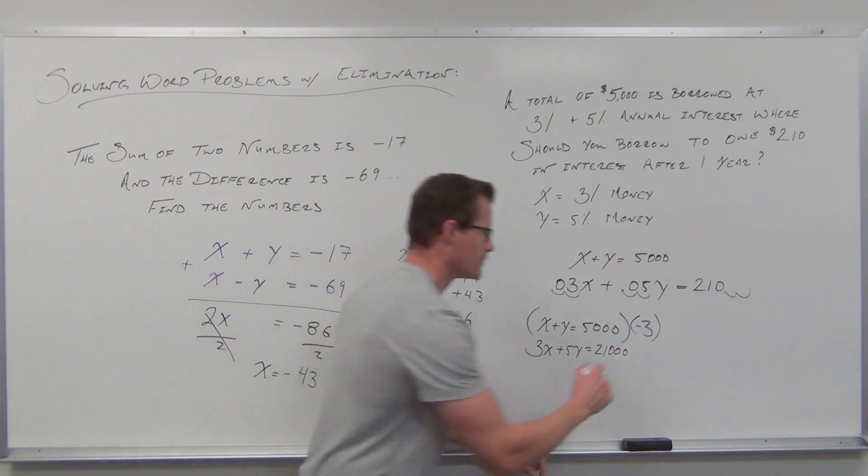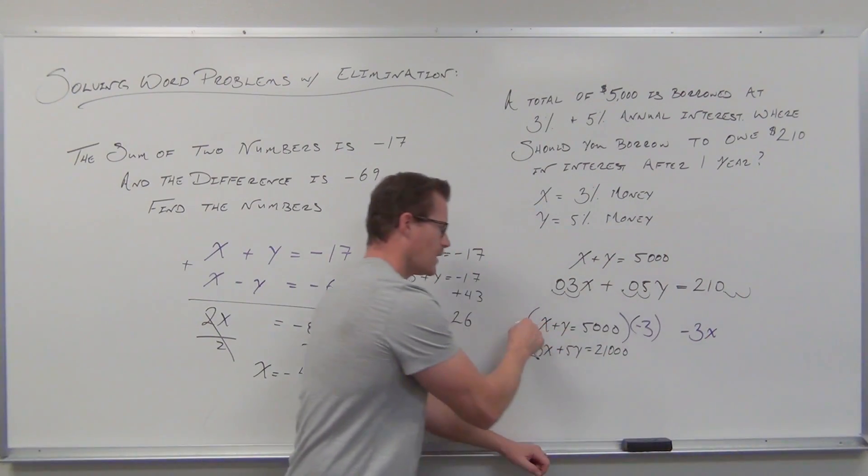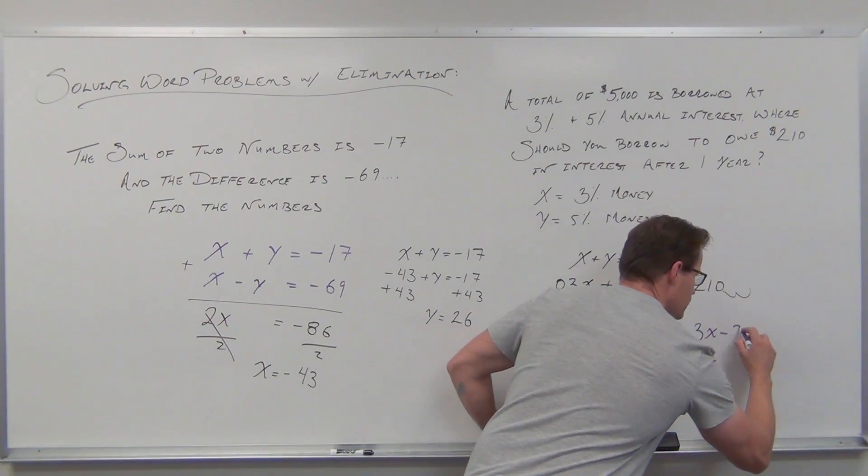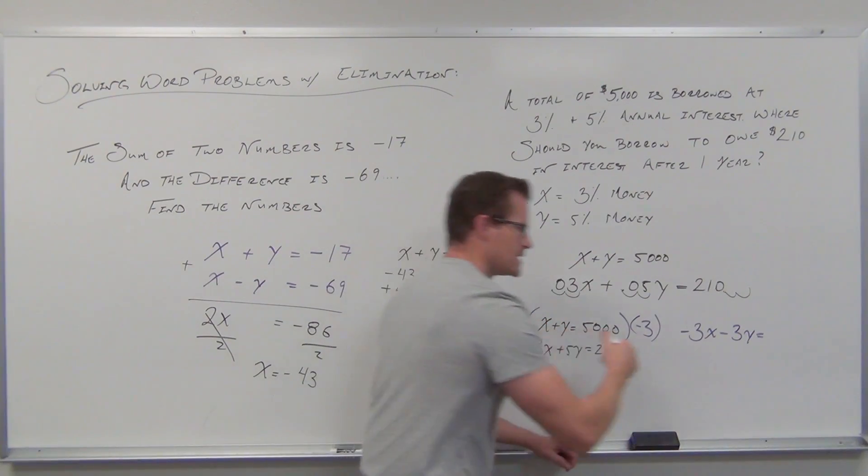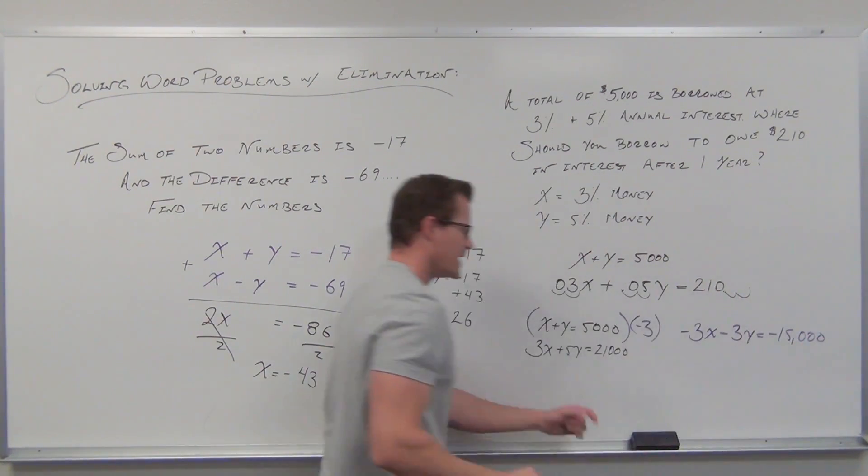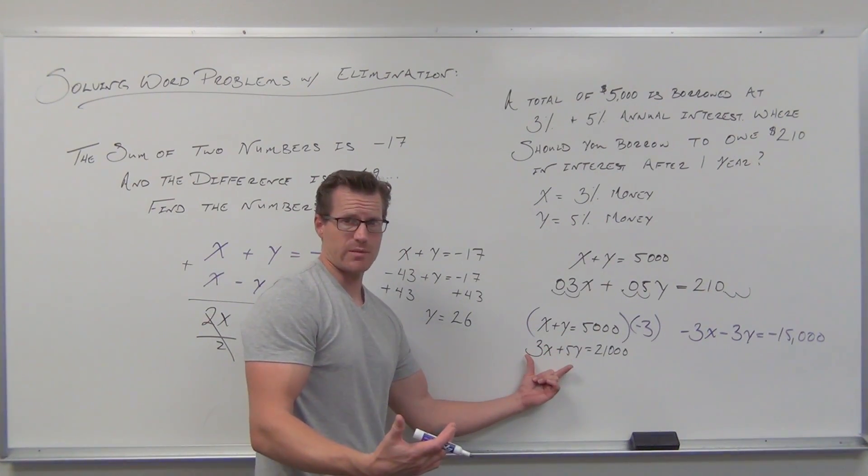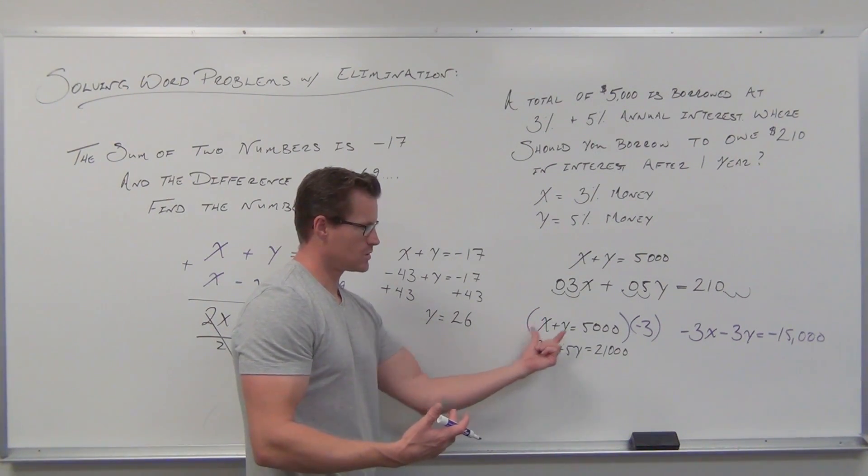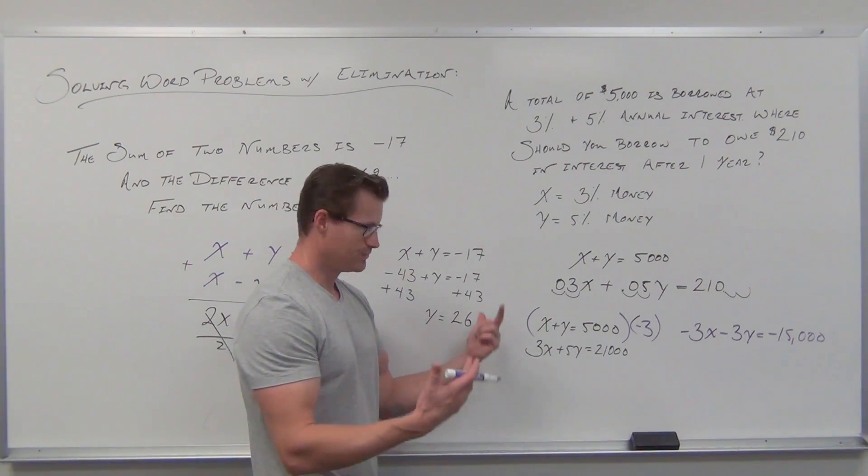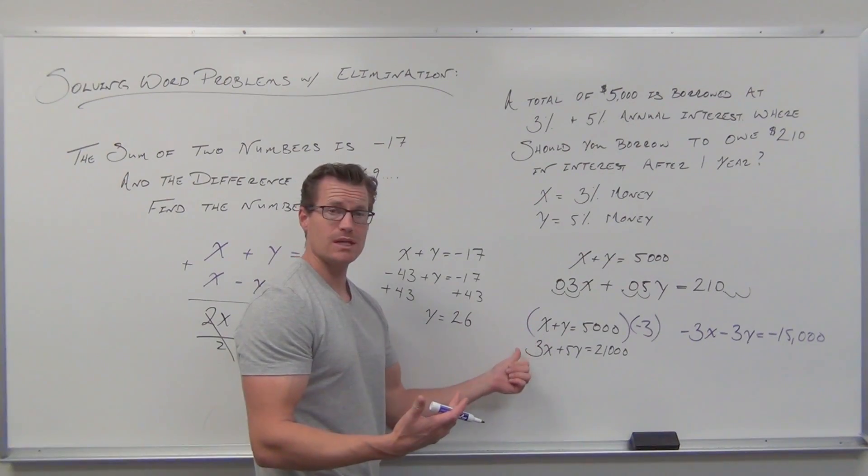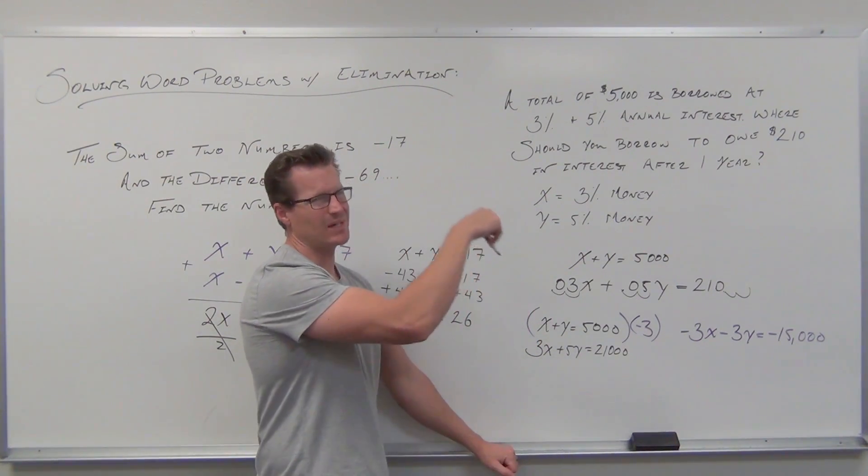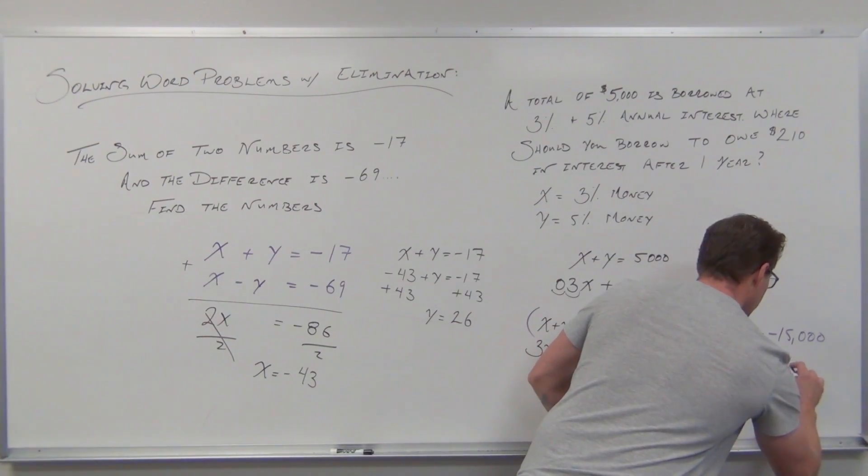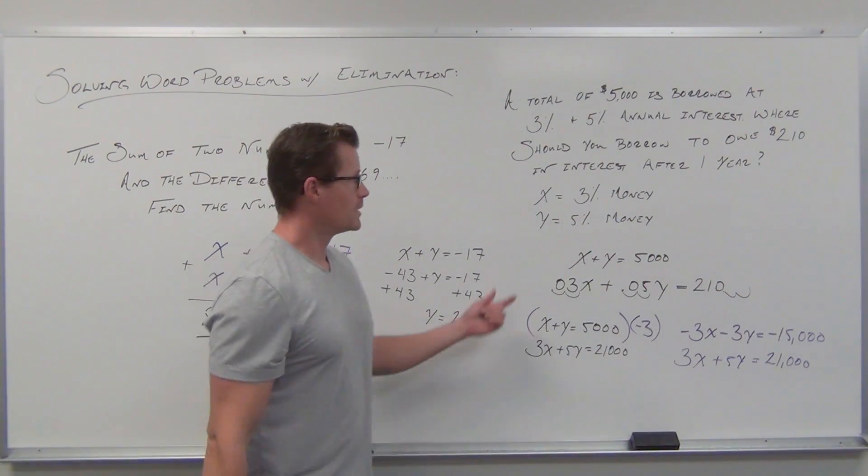Every single term gets multiplied by -3. Multiplying x by -3 gives -3x. We'll have -3y. We'll have -15,000. Notice what that does - I don't even have to multiply my bottom equation by anything. The least common multiple is 3 for these terms. That's the smaller number. But I also need opposite signs, so multiply by -3.